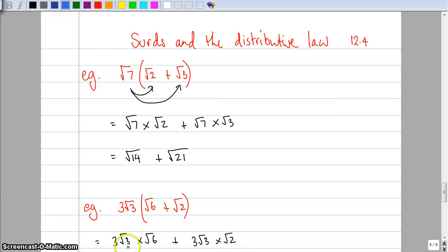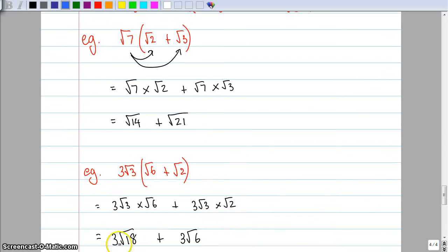Now the number in front of root six is a one and the number in front of the root two is a one. So this becomes three root eighteen plus three root six.